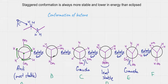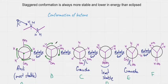Then you rotate again — staggered, then eclipsed. When you rotate again you get staggered again. I like rotating the carbon in the back: hydrogen goes up, methyl goes here, this hydrogen goes here. Now we have staggered again.